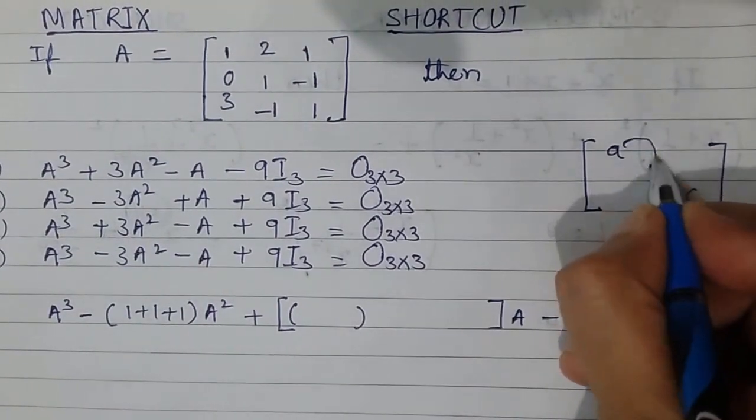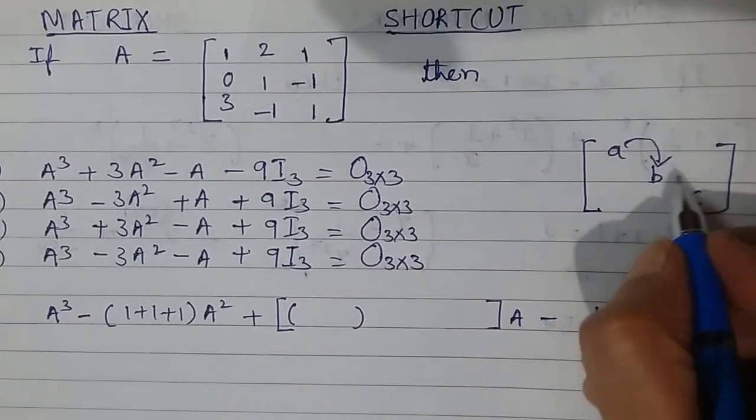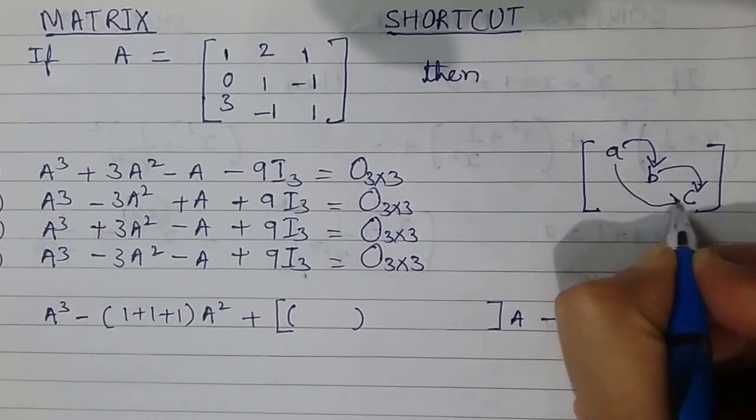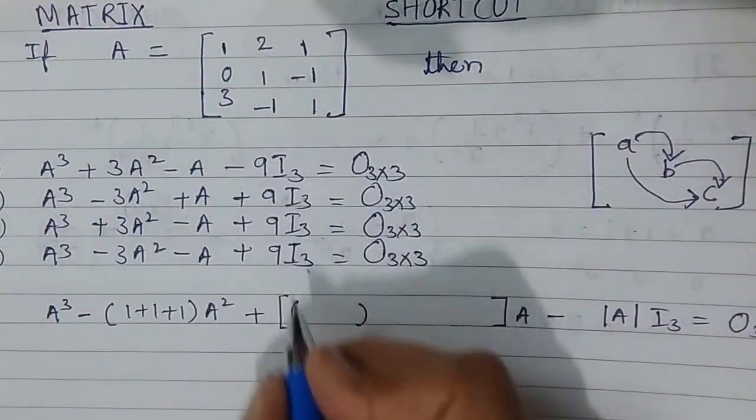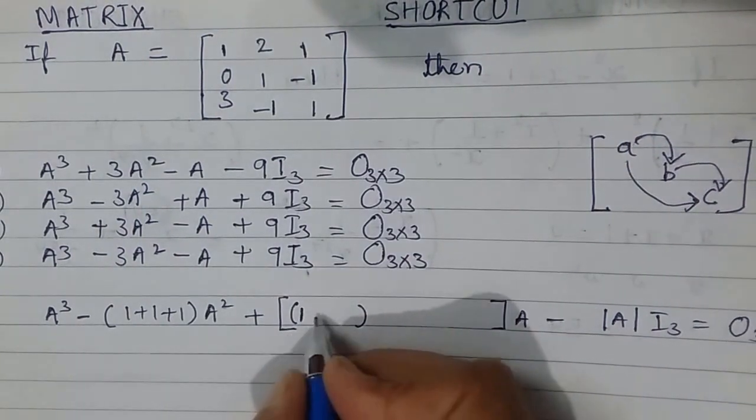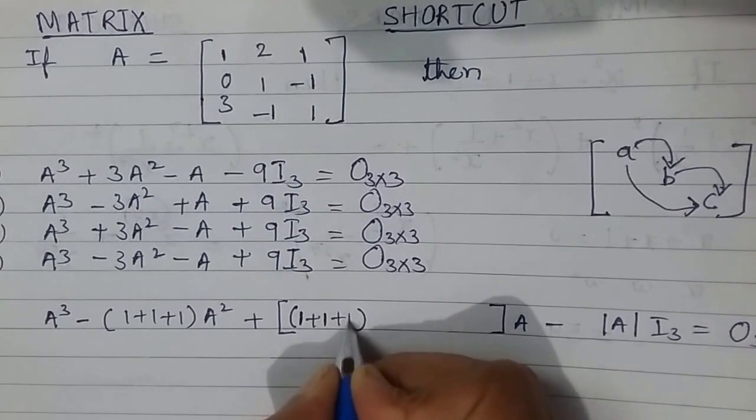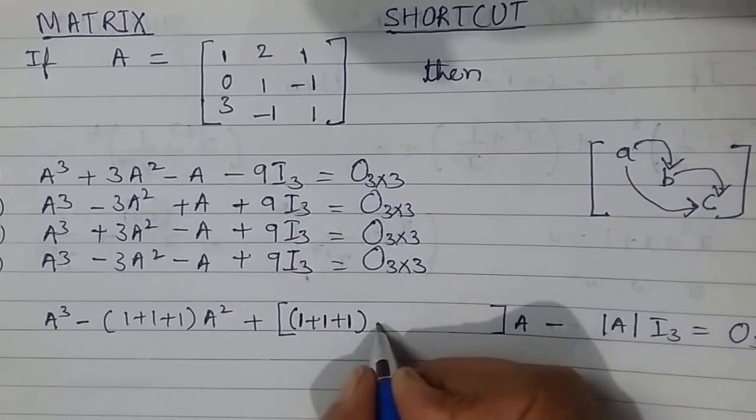This into this plus this into this plus this into this. Okay, a into b—in my question this is 1. b into c—this is again 1. Then c into a—this is again 1. Then minus sign.